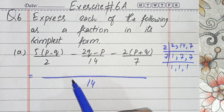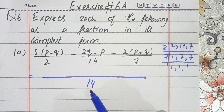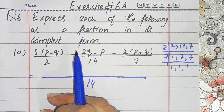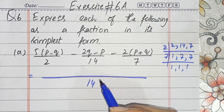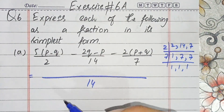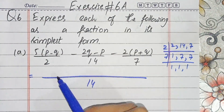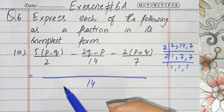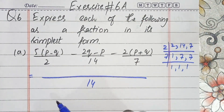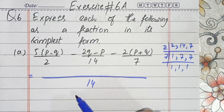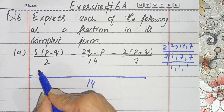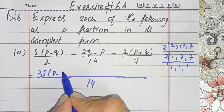We will convert it into the simplest form. We will multiply each term by the value needed to reach 14 — this is the LCM rule. In the LCM rule you can add and subtract fractions. Taking the LCM: 2 times 7 is 14, 7 times 5 equals 35, giving us 35(P minus Q).